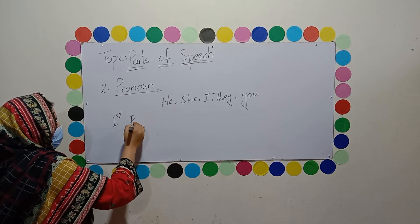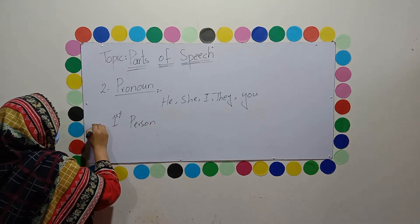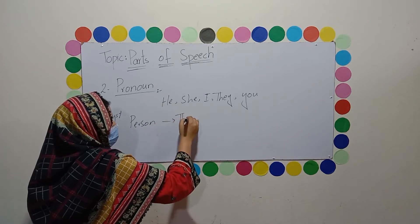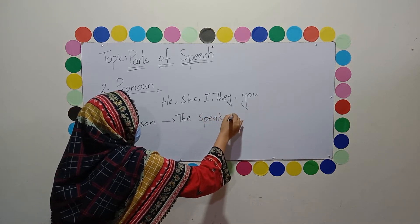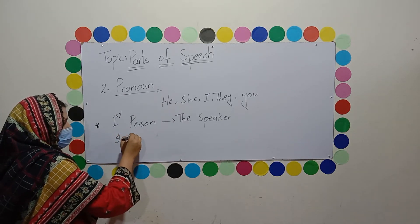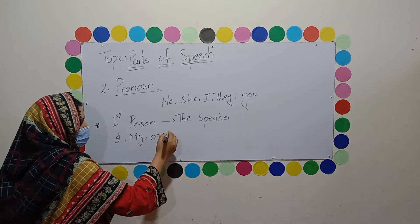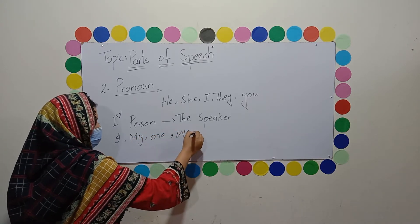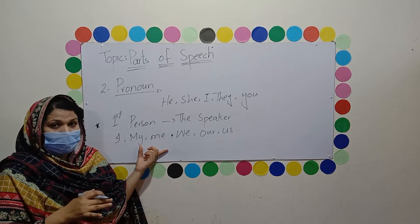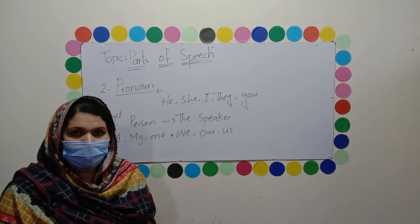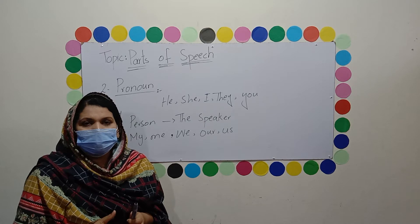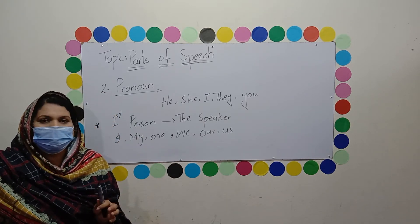First person — we use the first person for the speaker, the one who is speaking. Pehle aapko pata hona chahiye: first person ham speaker ke liye use karte hain. First person mein I, my, me aate hain, aur we, our, us. These are the first person pronouns, used when talking about yourself — single or as a group.